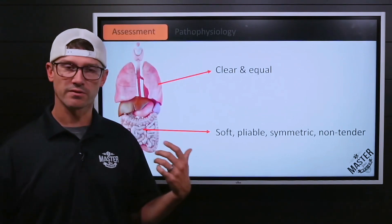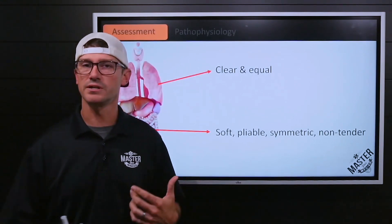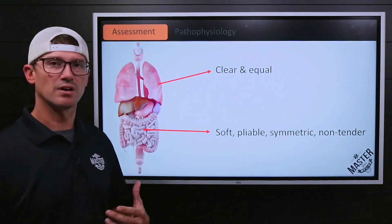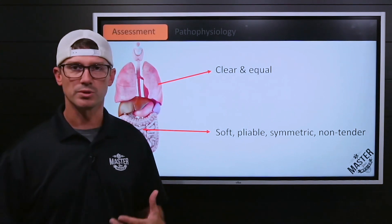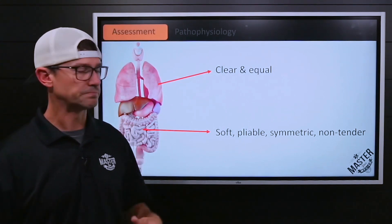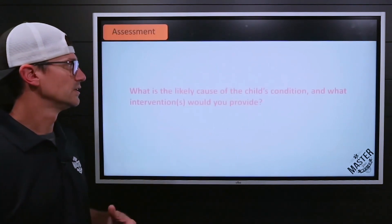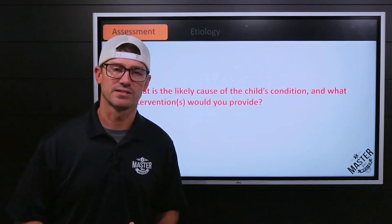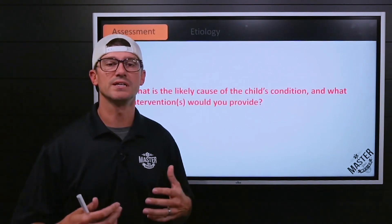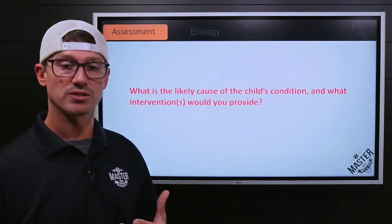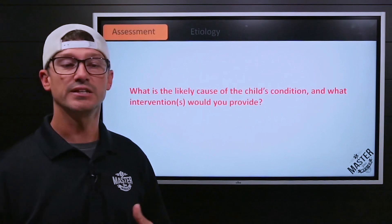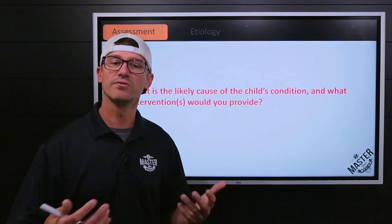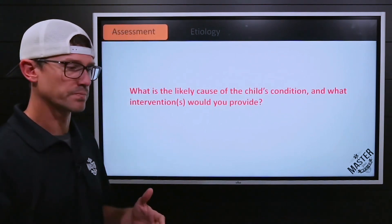Lung fields are clear and equal in all lobes. Abdomen is soft, pliable, and non-tender. So you're asked: what is likely the cause of this child's condition, and what interventions would you want to do?